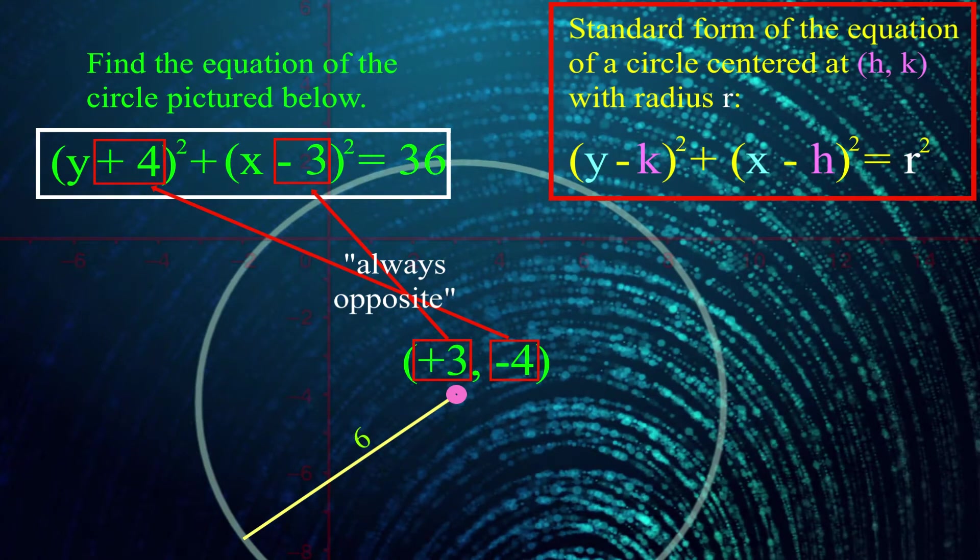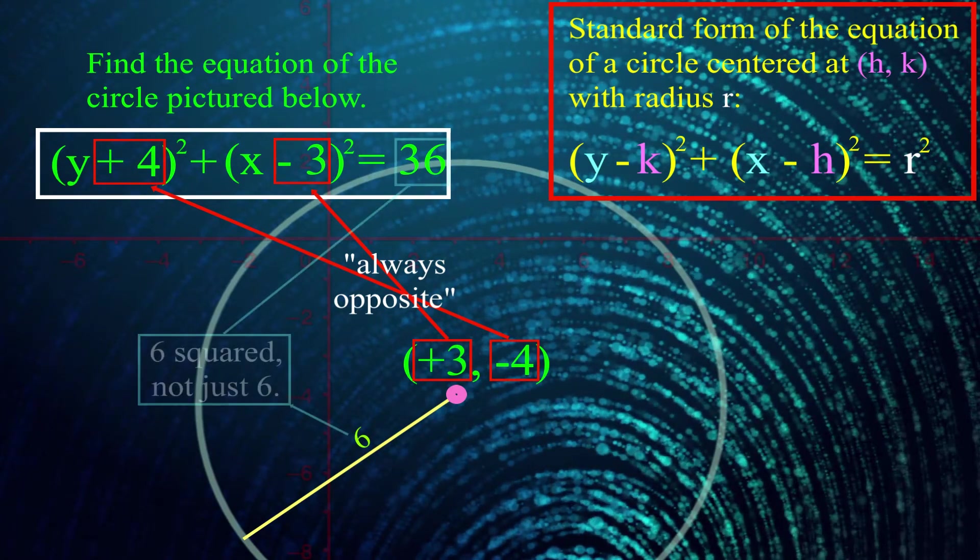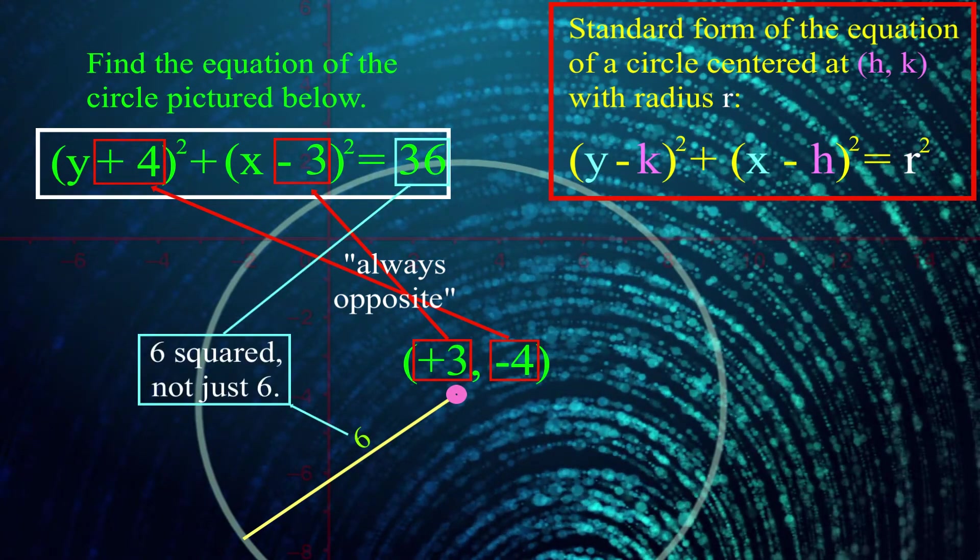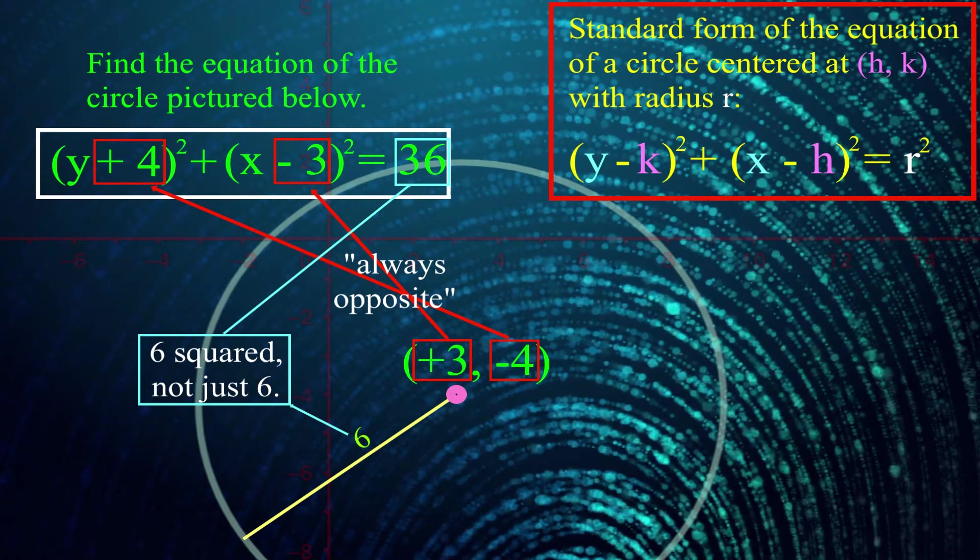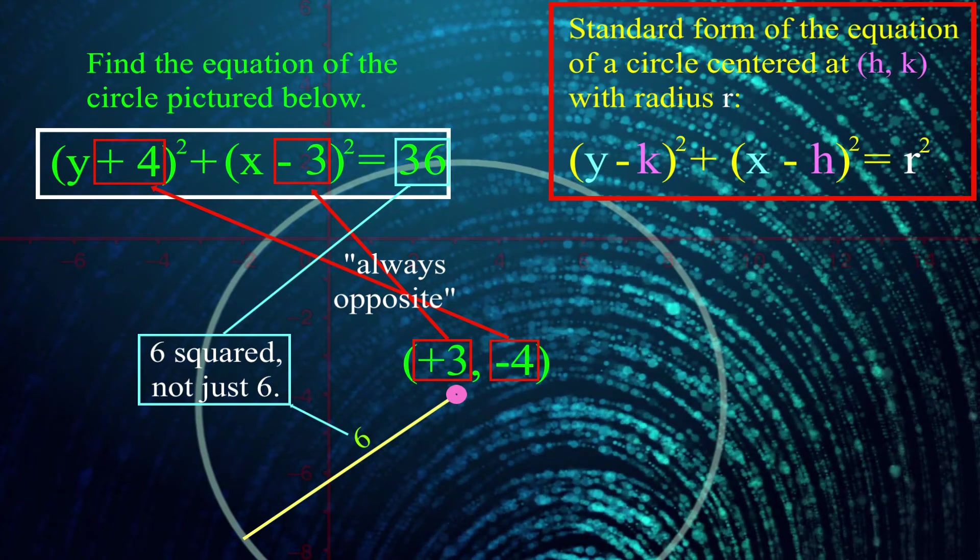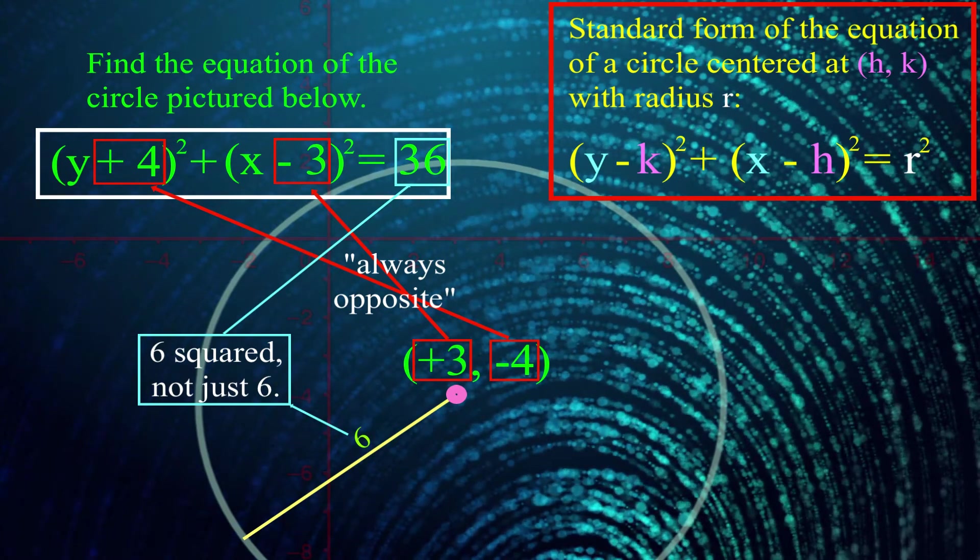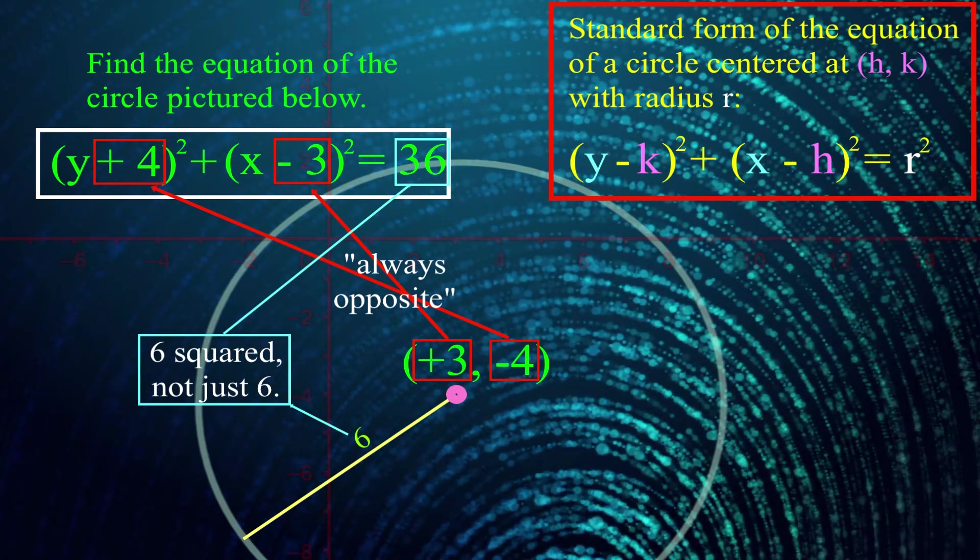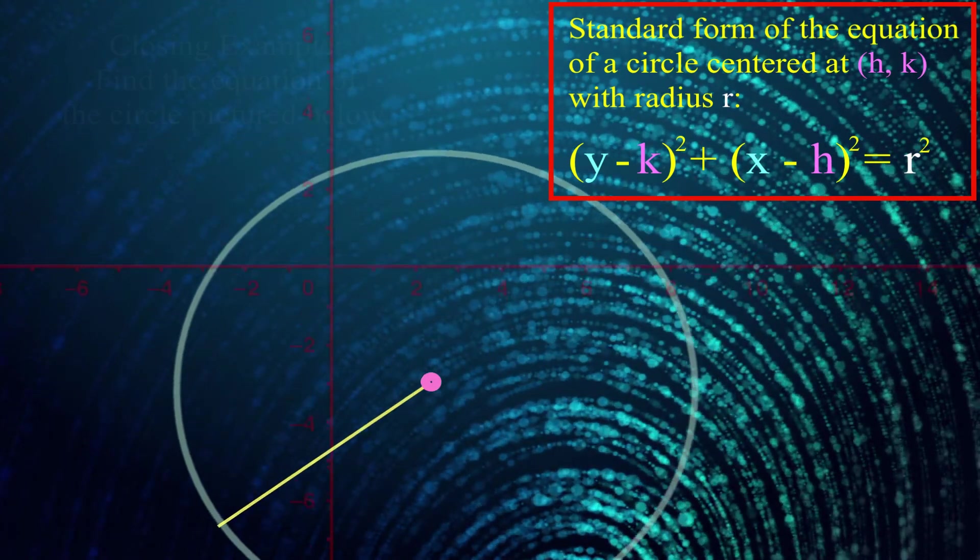The other thing to watch out for is just make sure you square your radius. It's so easy to be super careful with the signs on everything and get everything in the right place and totally understand what you're doing, but leave a 6 on the right side of the equation instead of 6 squared or 36. In my experiences, those are the two major pitfalls that students run into. And as long as you can avoid those, you're probably in pretty good shape. That's everything for this video.